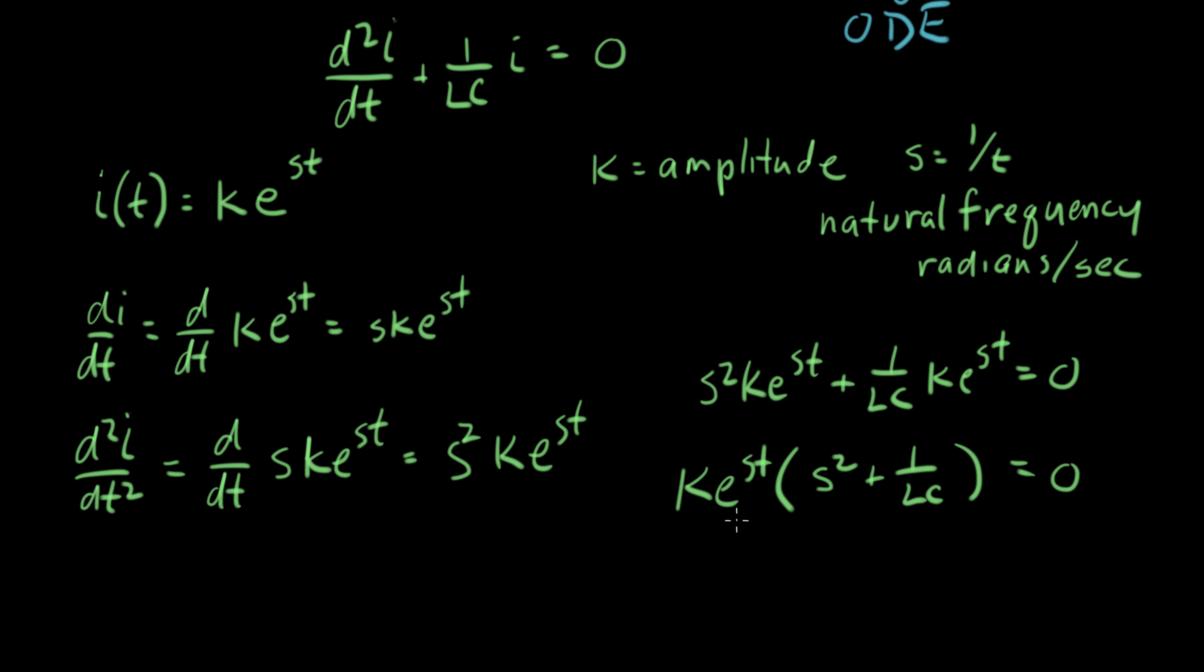Now, does e to the st ever become zero? E to something, does it ever become zero? It never does. If I let t go to plus infinity and s is negative, then e to the st would become zero, but plus infinity time from now is pretty far in the future, and I don't want to wait that long. So the interesting solution becomes, can we make s squared plus one over LC equal to zero?